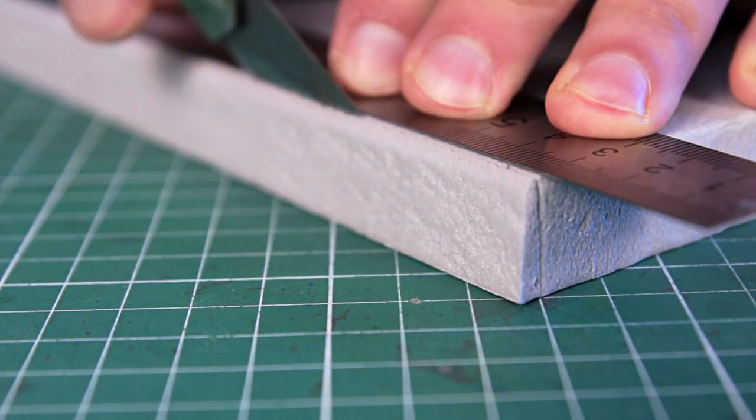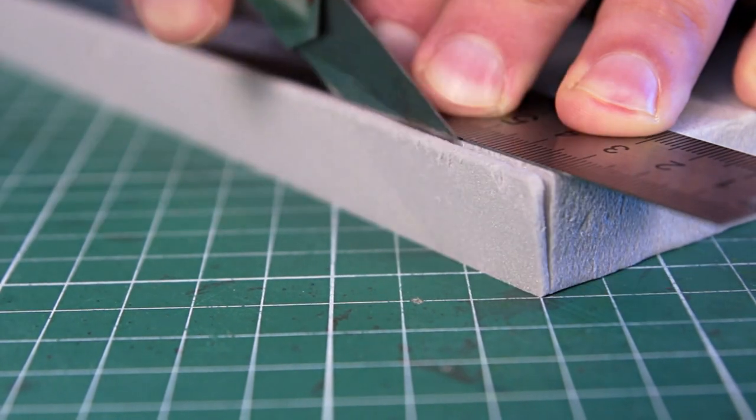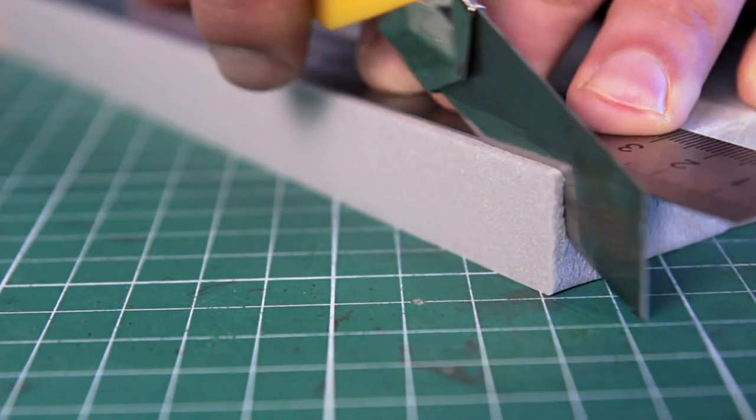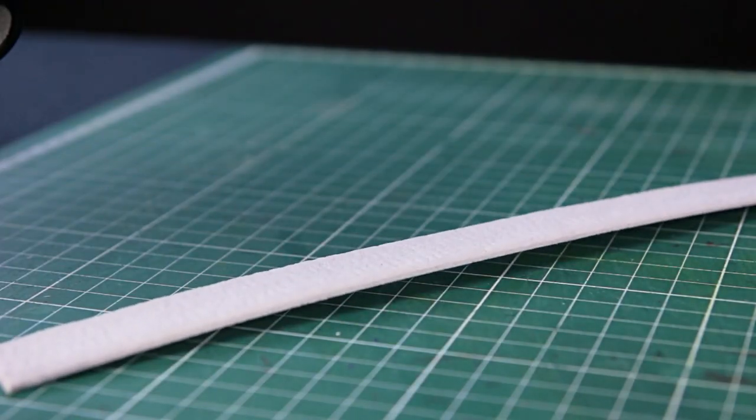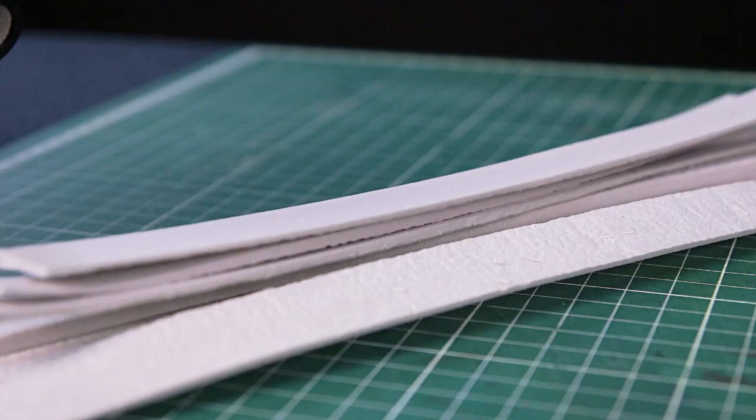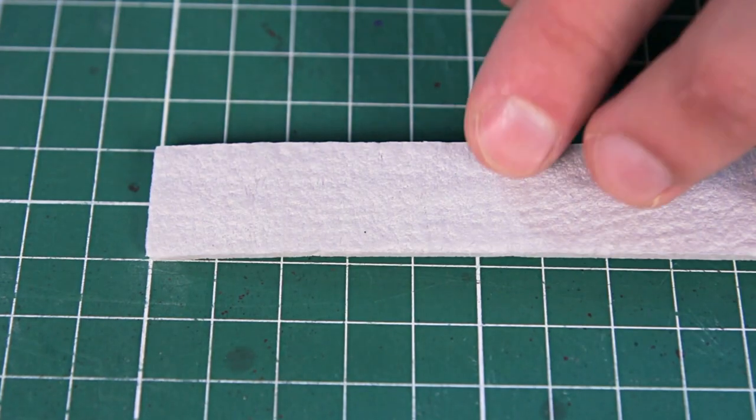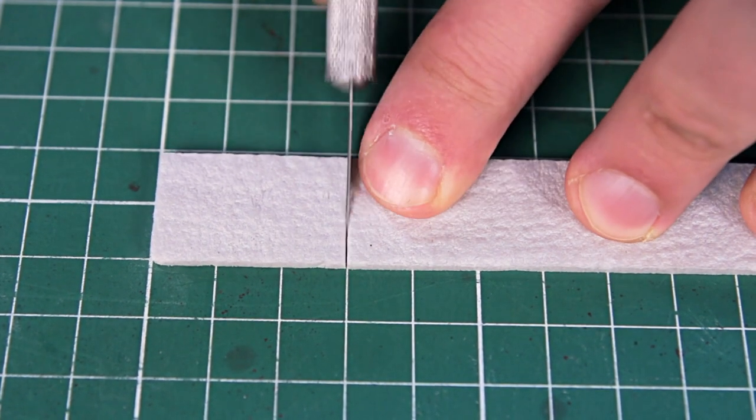Now I cut the thin strips. I purposely cut them in different thicknesses so that the wall would be embossed. I will need quite a few of them. From these strips I will cut blocks of 3 cm.